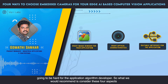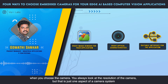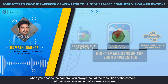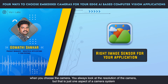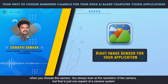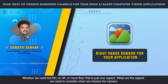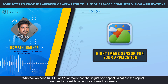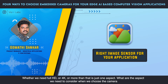What we would recommend is to consider these four aspects when you choose the camera. We always look at the resolution of the camera, but that is just one aspect of the camera system. Whether we need full HD, 4K, or more than that — it is just one aspect. What are all the aspects we need to consider when we choose the camera?